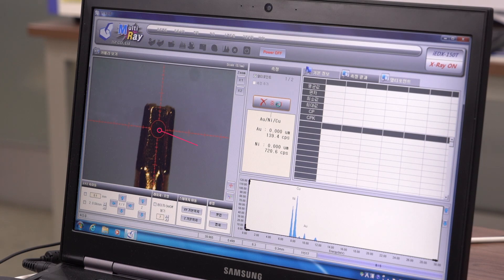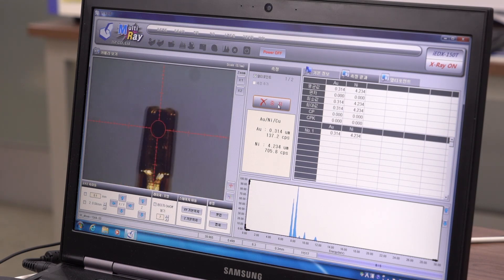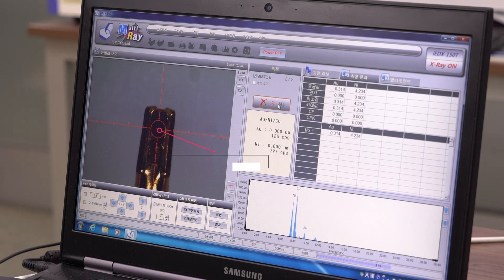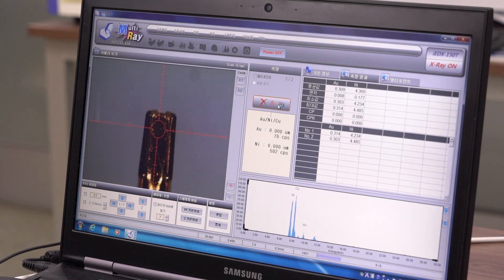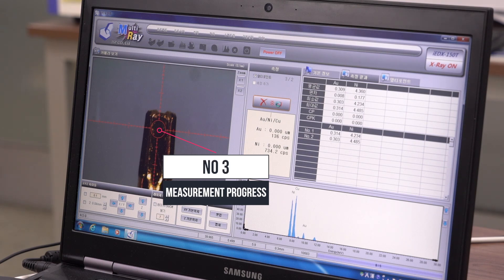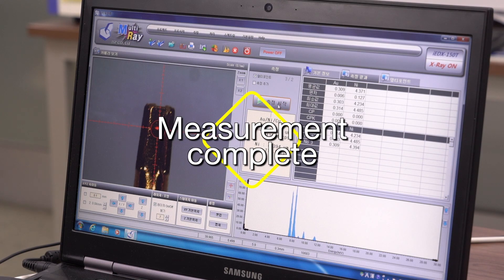Start measurement from the first registered point. Measure the second point you registered. Measure the registered third point. When the measurement is finished, the measurement is completed after moving to the first point.